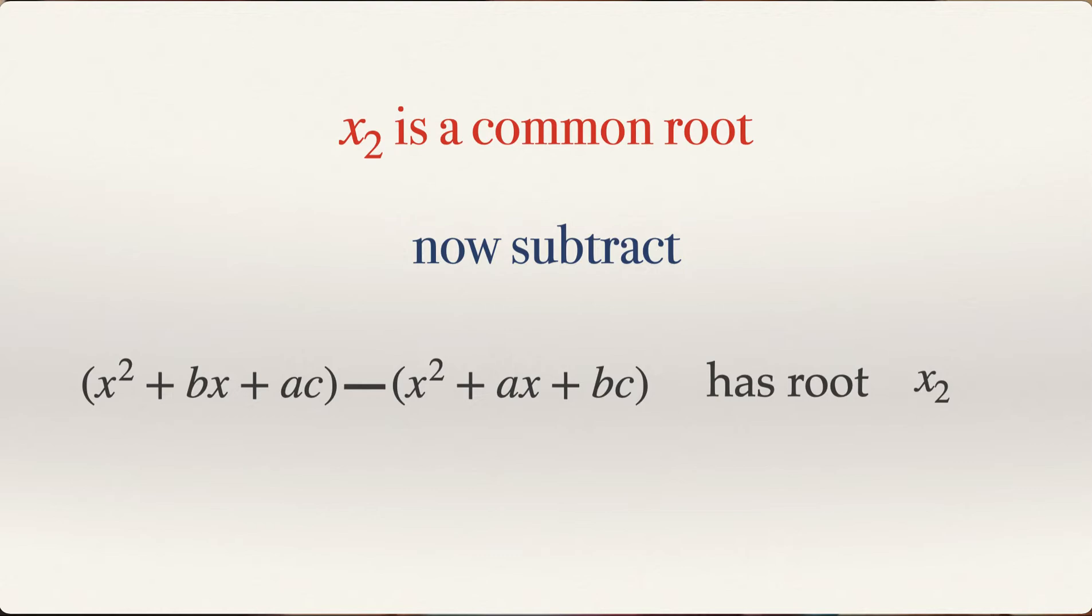Remember x2 is the common root of each of them. So when we subtract, x2 will still be a root of this new expression. So we can rearrange and do some calculation. x squared will cancel off and bx minus ax plus ac minus bc. This will be the expression and we know that it has root x2.